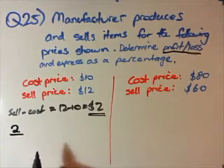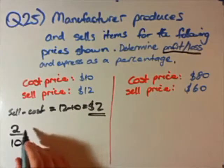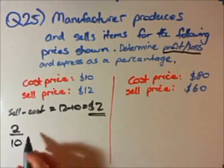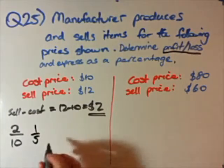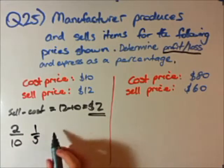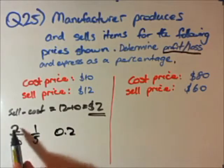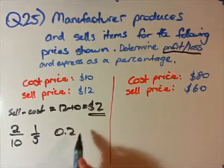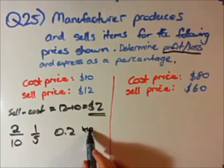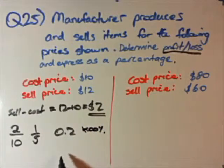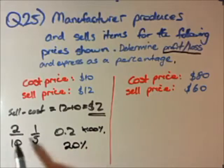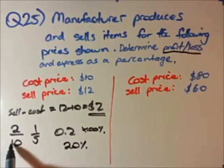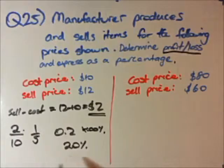Now we want to express that profit as a percentage. We take the $2 profit and divide by the cost price of $10. This fraction 2/10 simplifies to 1/5, which as a decimal is 0.2. Multiplying by 100 gives 20 percent. Alternatively, you could convert 2/10 to 20/100 by multiplying both by 10 to get the same answer of 20 percent profit.